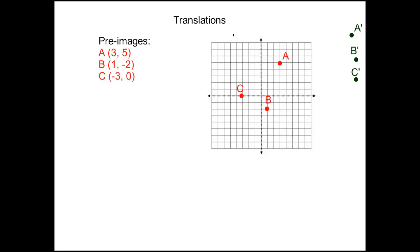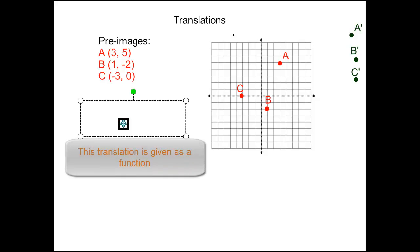Now let's get to the actual function, the translation that's going to tell us what to do with these pre-image points. Don't be intimidated by the kind of weird looking symbols. It's not as bad as it looks. All it's really saying is take every x value from the pre-image points and translate it by adding 2 to it.